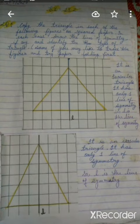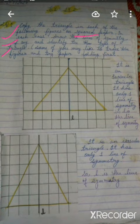Good morning students. Today I am teaching you Exercise 13.2, Question Number 2: copy the triangle in each of the following figures on squared paper. In each case, draw the line of symmetry if any, and identify the type of triangle. Some of you may like to trace the figure and try paper folding first.